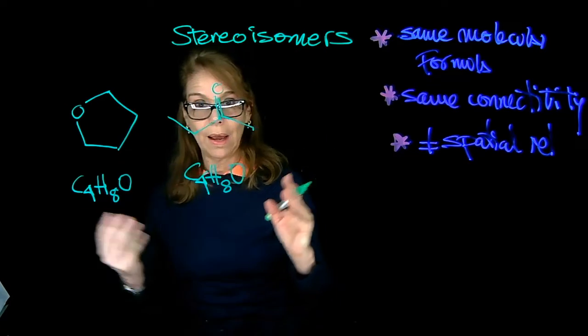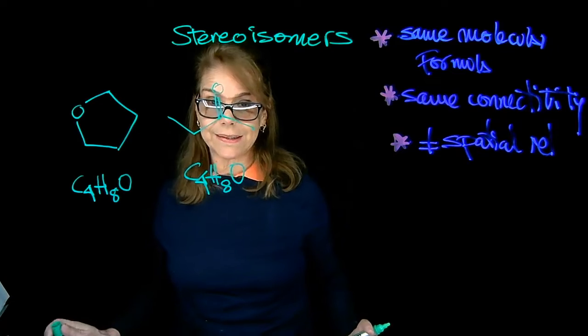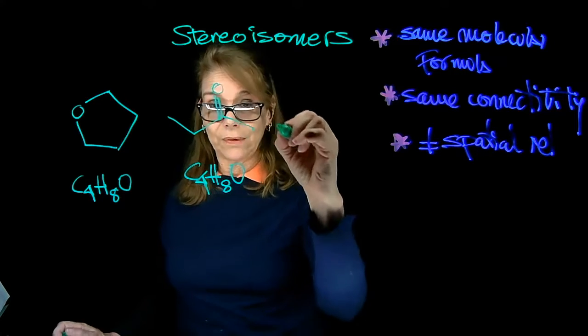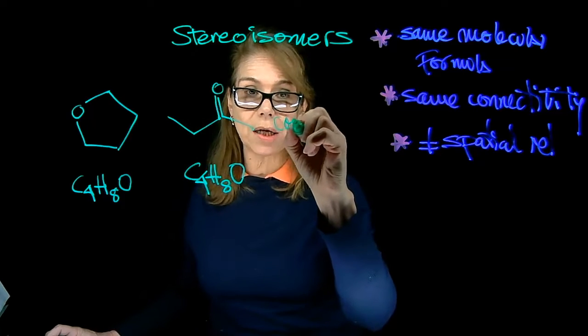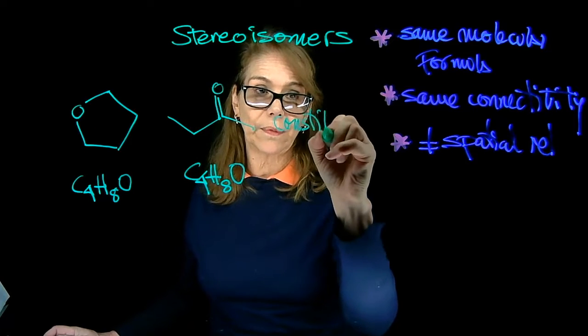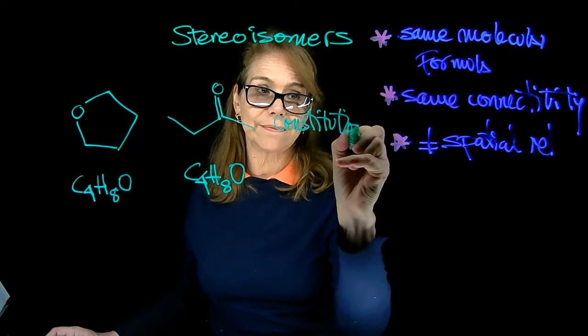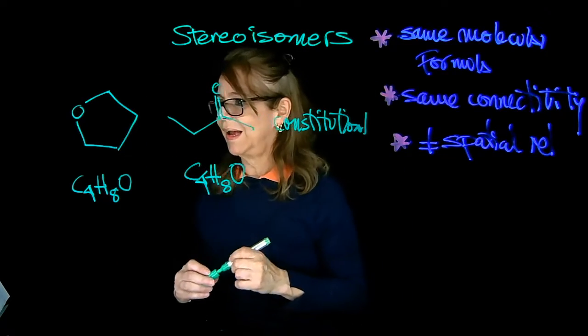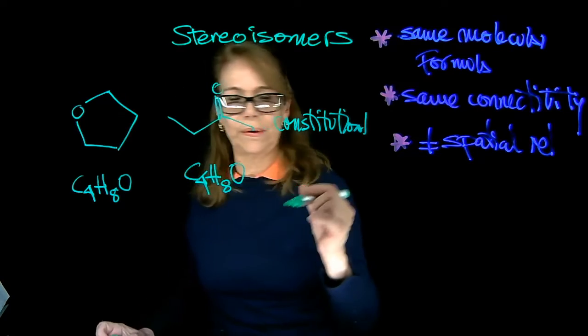So same molecular formula. Are the atoms connected the same way? They're not. So because they are not, these two are related as constitutional isomers. Okay, so we're going by the checklist. Now let's do a couple more examples here.